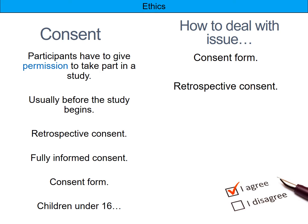To deal with the consent issue: get participants to sign a consent form, or use retrospective consent if you couldn't obtain it beforehand. Parental consent is required for anyone under 16 — if exam questions include a scenario with children under 16, make sure you discuss parental consent. Assumed consent is not ideal but is possible as a last resort: give the study information to another group of people and if they all agree they'd be happy to participate, you can assume consent for others.